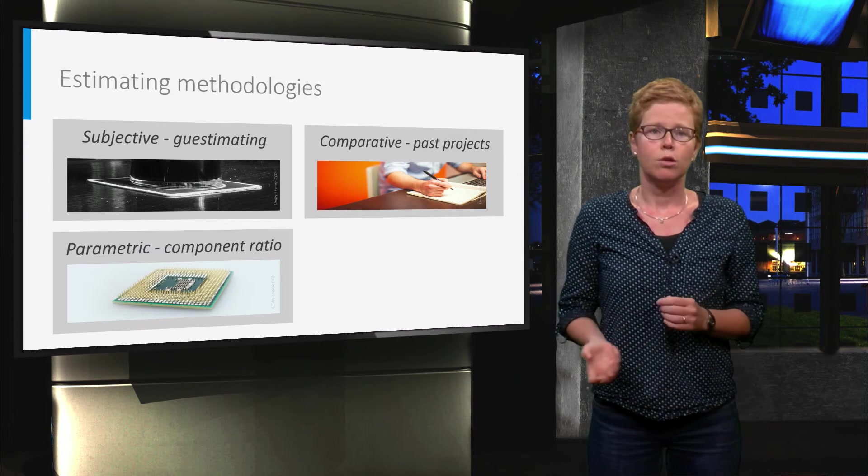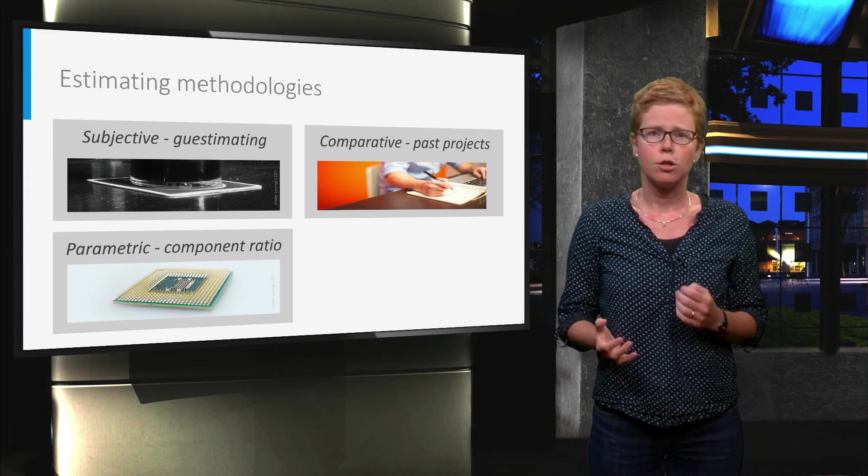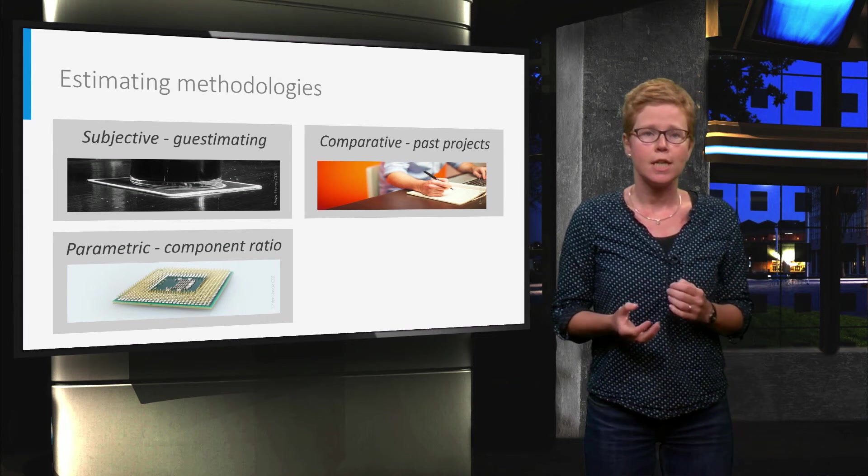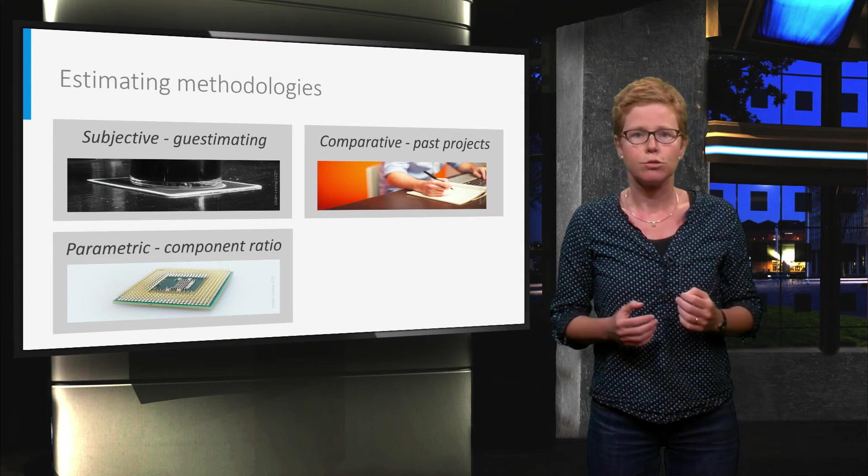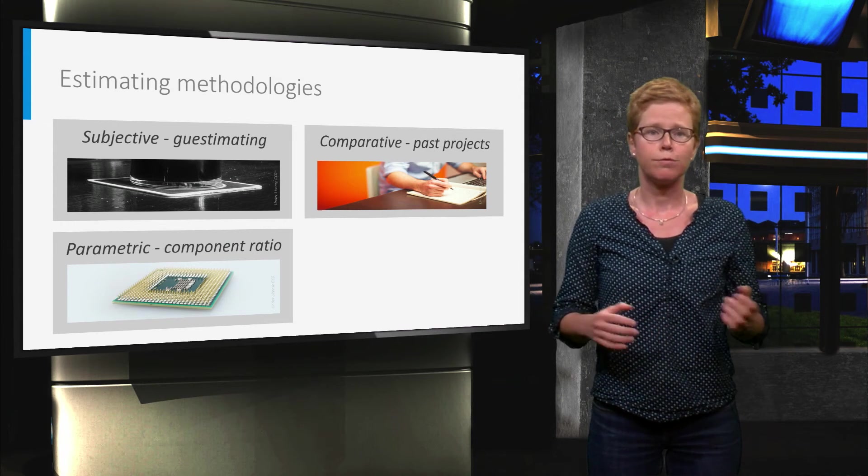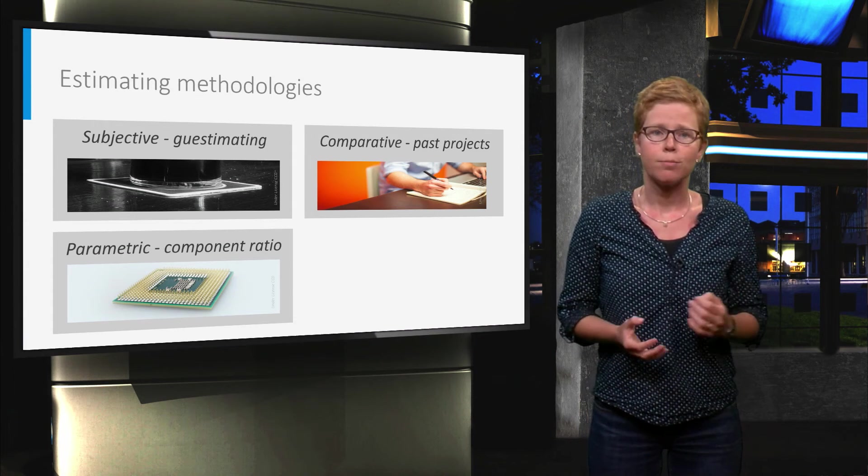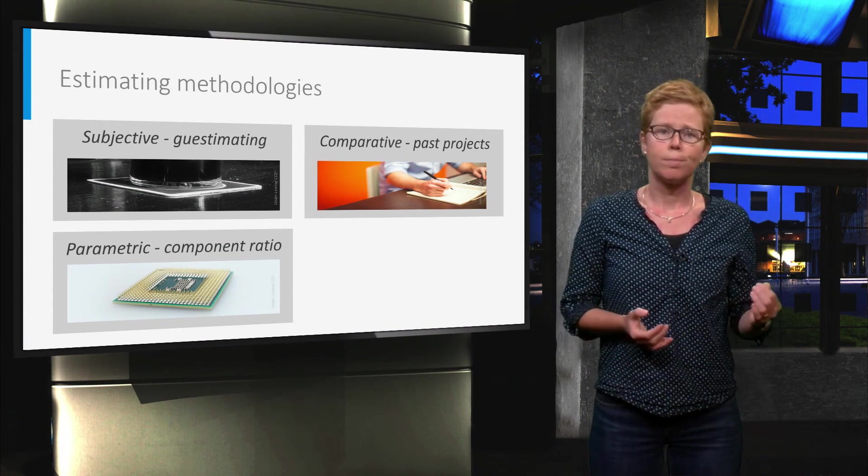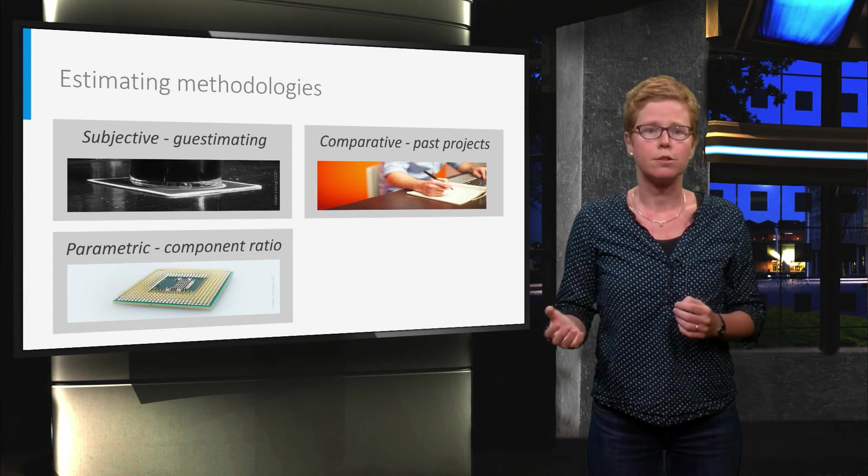Parametric estimating, also called component ratio method, is a technique that develops cost estimates based upon relationships between a project's characteristics and the resources consumed during its development, manufacture and maintenance. For parameters, think of functional design parameters, quantities of equipment or onshore versus offshore, as an example of the operational environment.